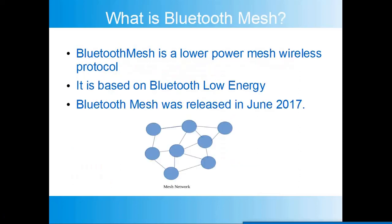Bluetooth mesh is a low-power mesh wireless protocol based on Bluetooth Low Energy. A device supporting Bluetooth Low Energy advertises first, then gets connected with another device, and data communication starts. In Bluetooth mesh, advertising is used on most occasions. On rare occasions, when an external device not supporting Bluetooth mesh wants to communicate with the mesh network, the GATT-related or connection-related feature is used.